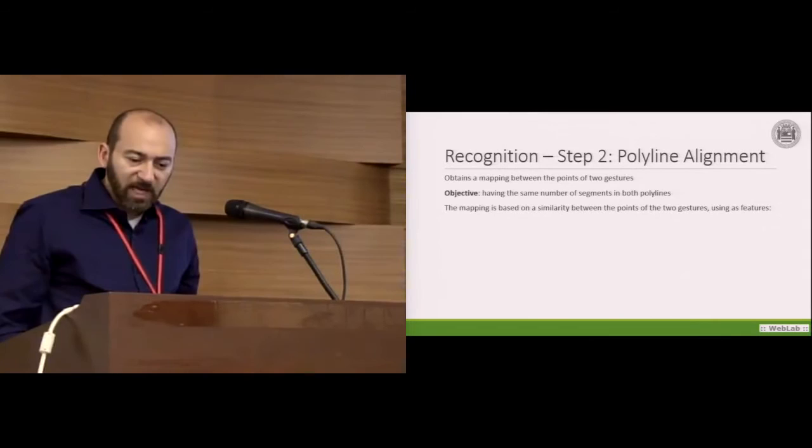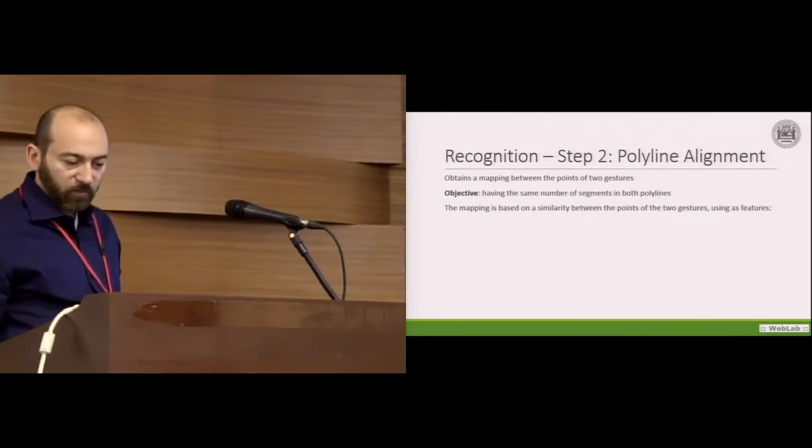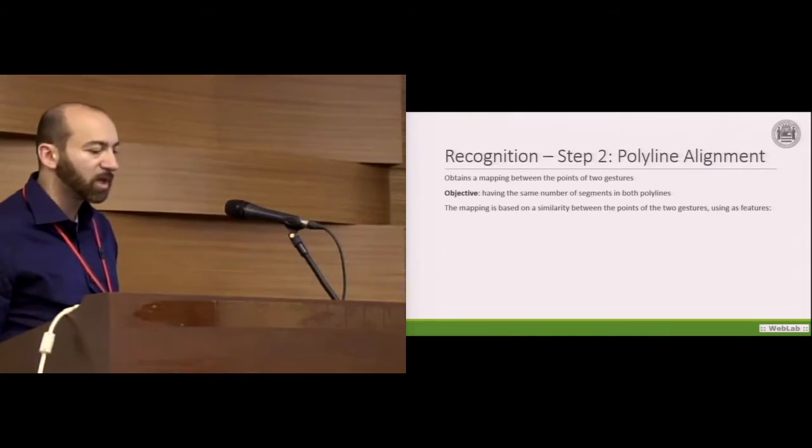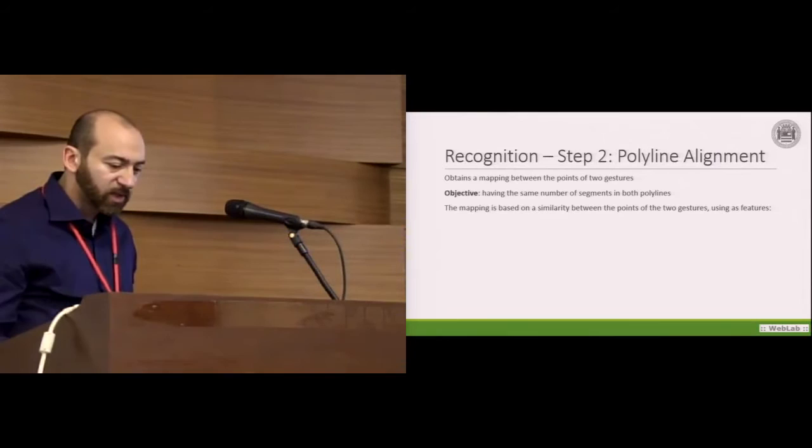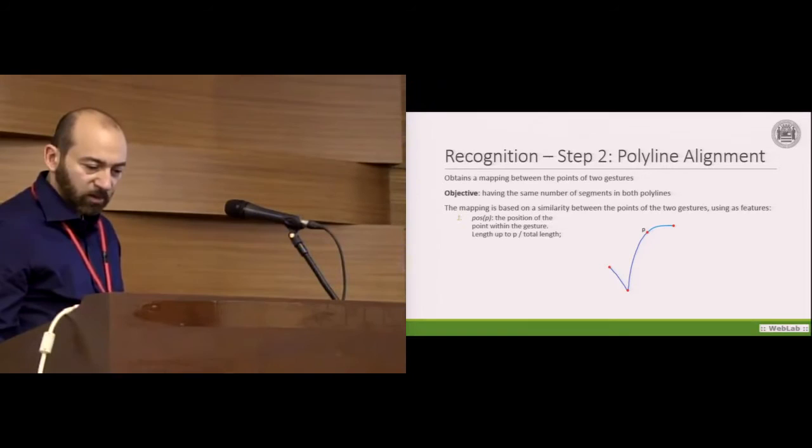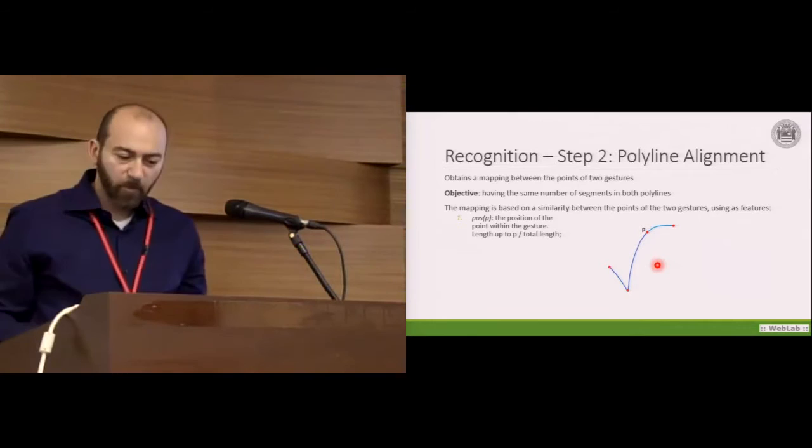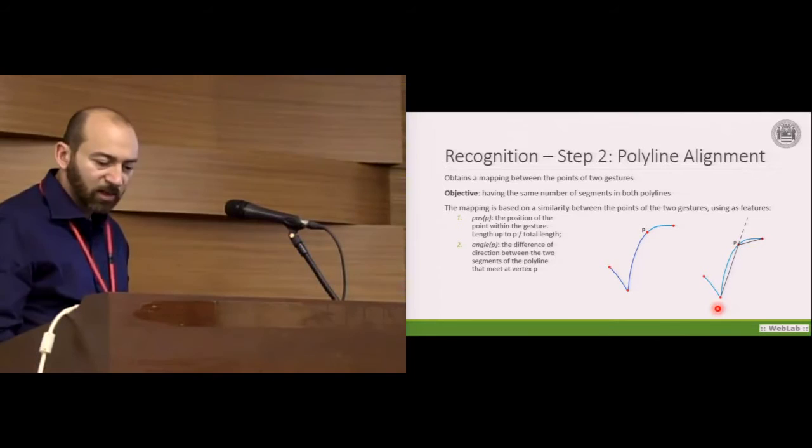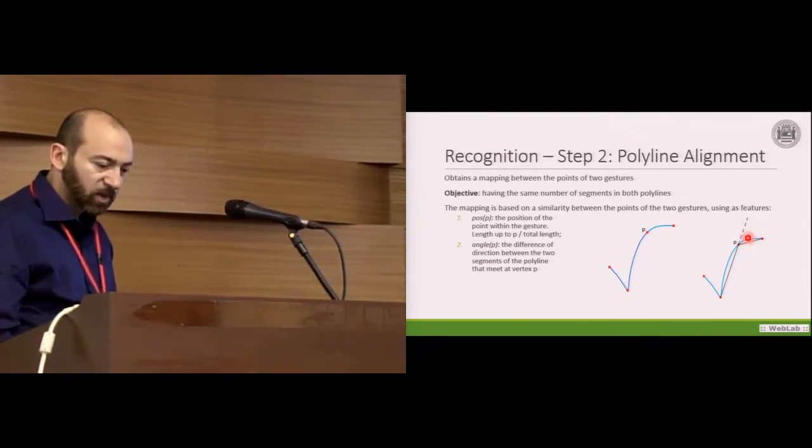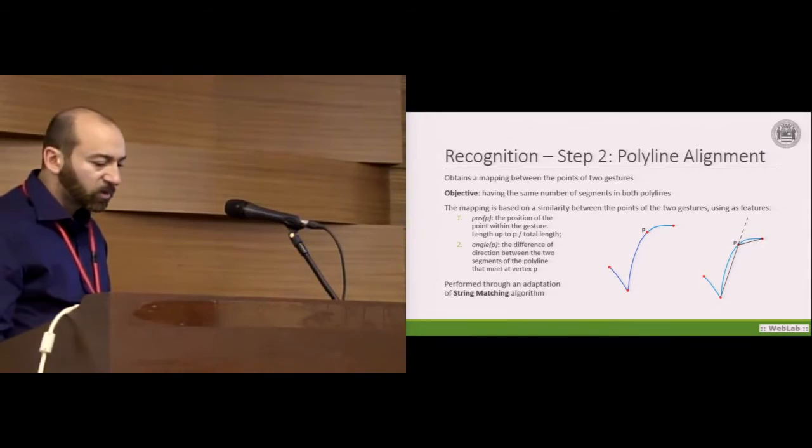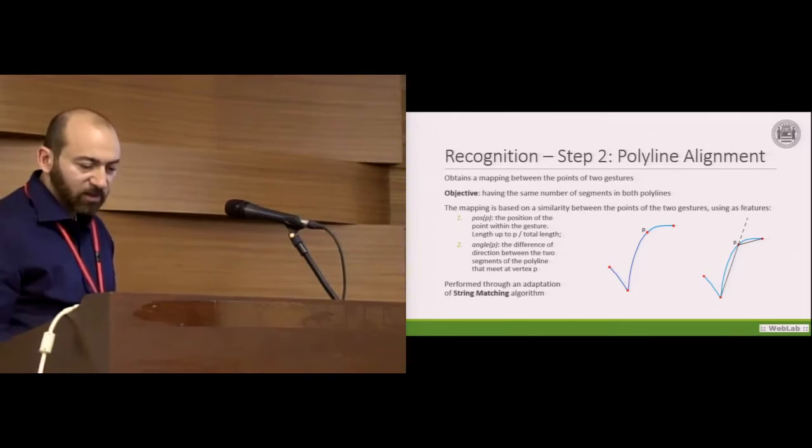The second step is polyline alignment, in which we obtain a mapping between the points of the two gestures. The objective here is to have the same number of segments in both polylines. The mapping is based on similarity between the points of the two gestures. We use two different features: the position of P, calculated as the length of the gesture up to P divided by the total length of the gesture, and the second feature is the angle of P, which is the change of direction at P.